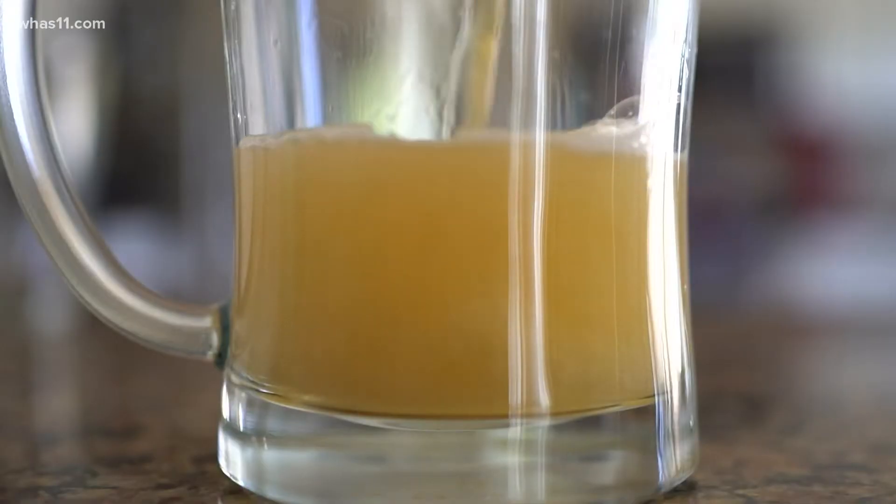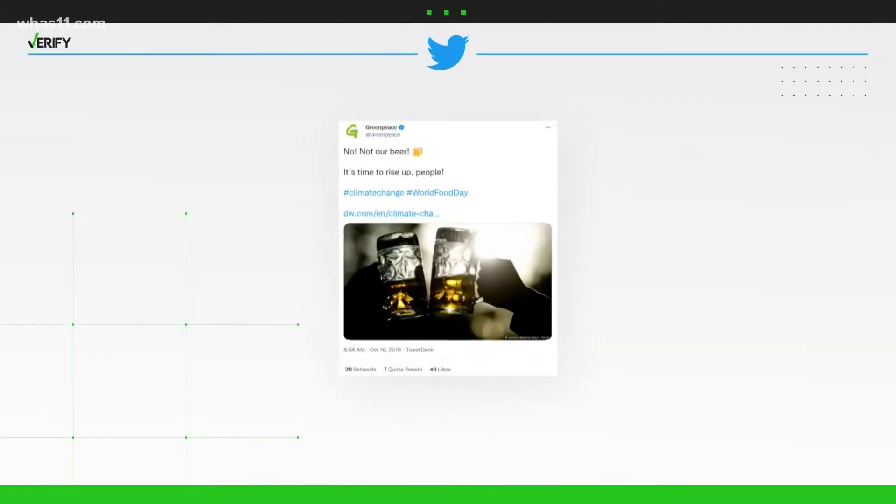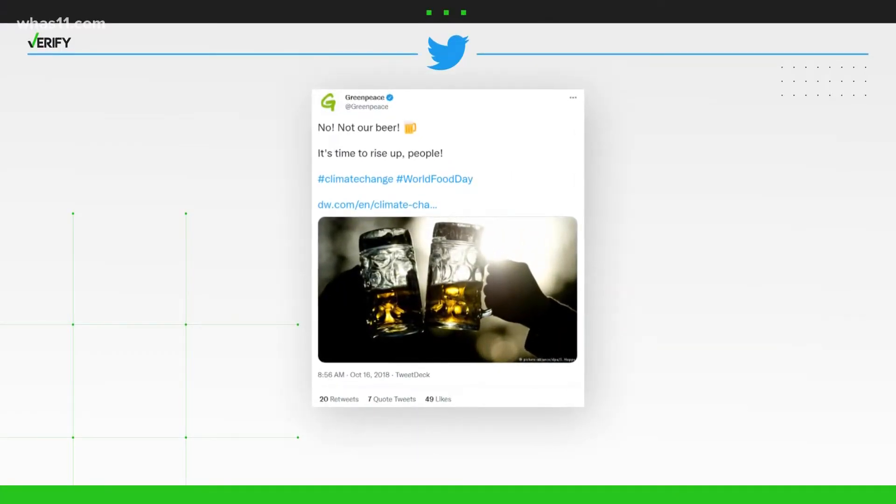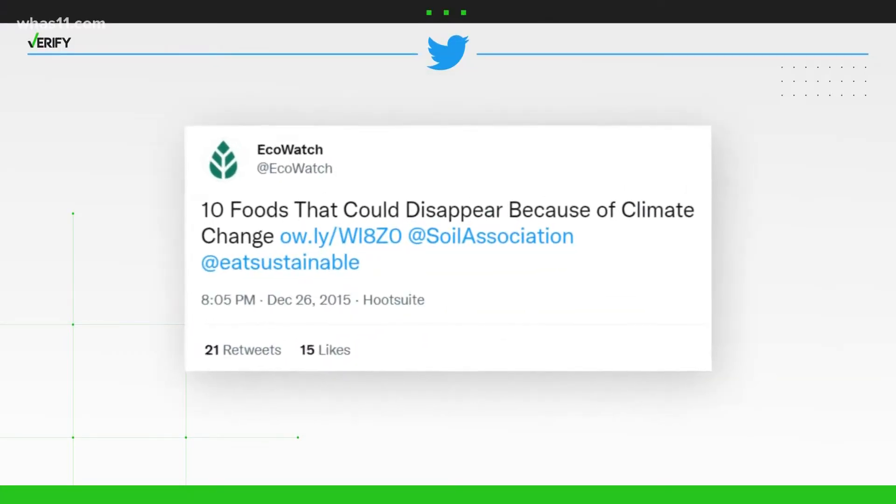So they're trying to make the topic more approachable by sounding the alarm about specific foods and beverages with wide appeal, like beer, which is the most popular alcoholic beverage in the world by volume. That led to tweets like these listing beer as one of 10 foods that could disappear because of climate change.